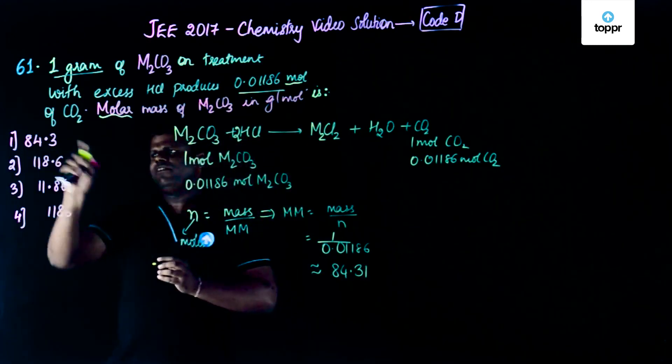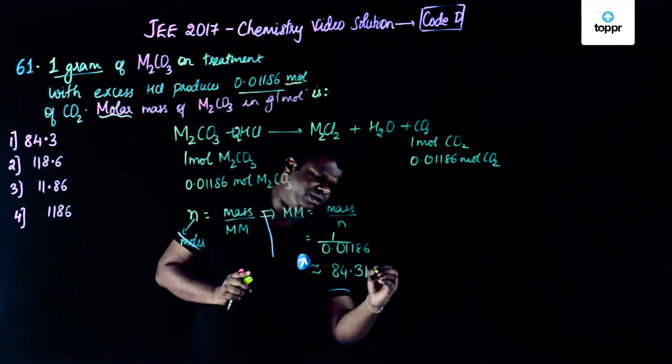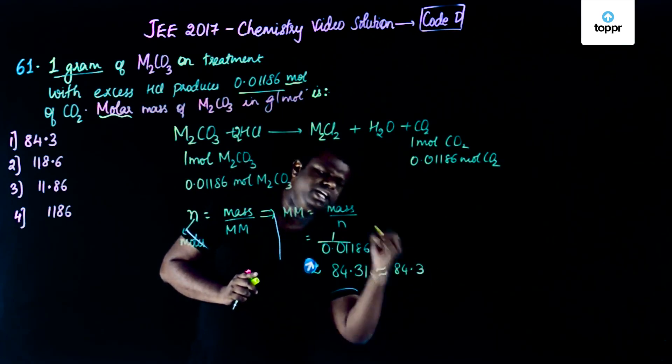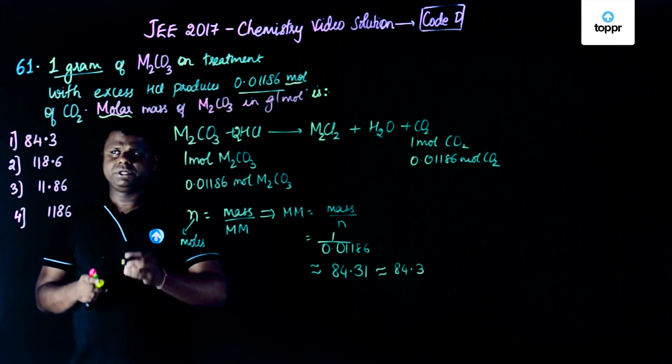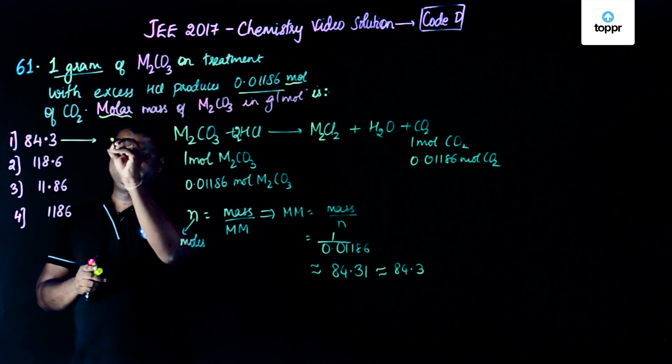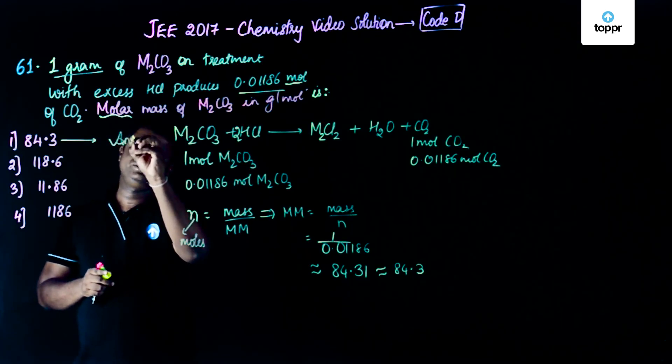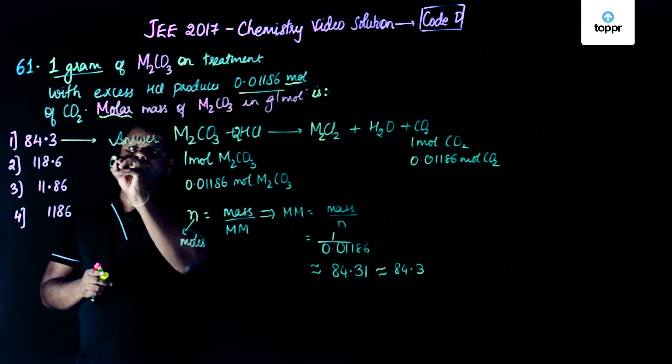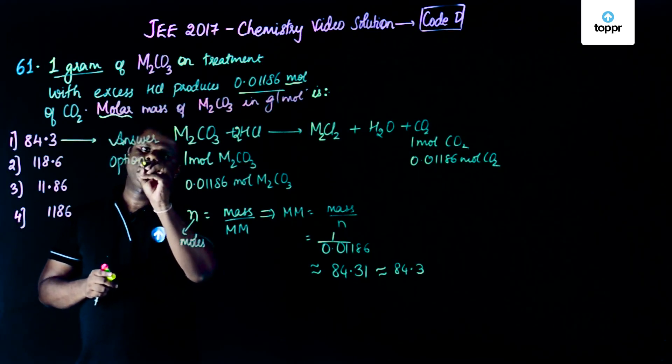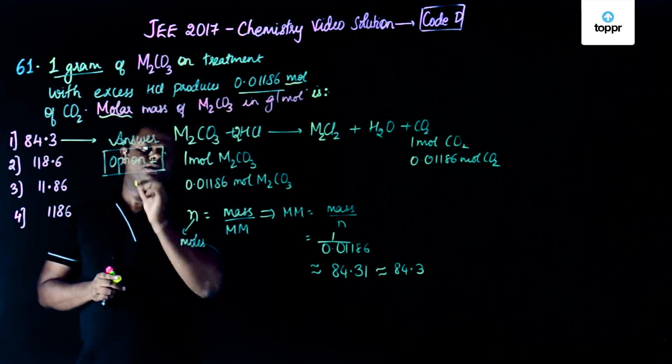Let's try to check. Yes, we have an option 84.3 so you could just round it off as 84.3. So the correct answer for this particular question is 84.3. The answer for this question is option 1.